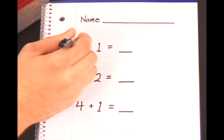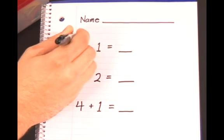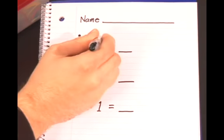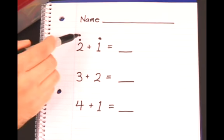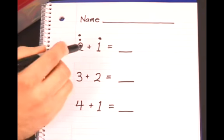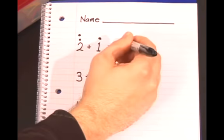So above the two, they'll make two dots. Above the one, they'll make one dot. And then tell them when they're done with this, count up all the dots. One, two, three. This is how many all together equals three.